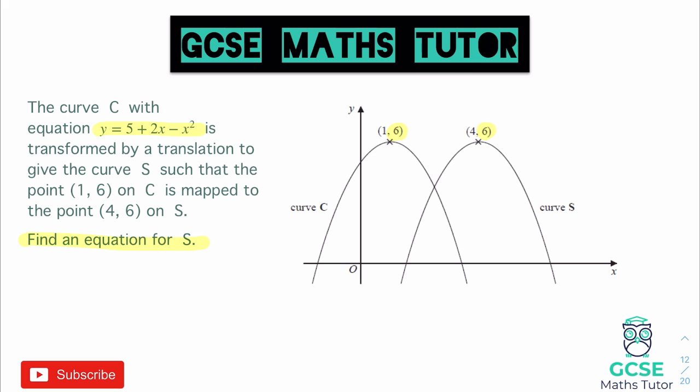With this particular question, we've got to know our graph transformations pretty well. We need to know what it means in terms of how we would write a graph transformation when a graph has moved to the right. If a graph has been translated to the right, let's imagine our original curve had the equation y equals f of x. To move a graph to the right, that involves making a change inside the bracket next to x, as we are affecting the x coordinate.